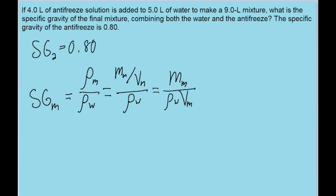We don't have the mass of the mixture either, but we do know that the mass has two components: there is water and antifreeze in it. So I'm going to rewrite the numerator where m sub m is equal to the mass of the water plus the mass of the antifreeze, and it's all divided by the density of the water times the volume of the final mixture.